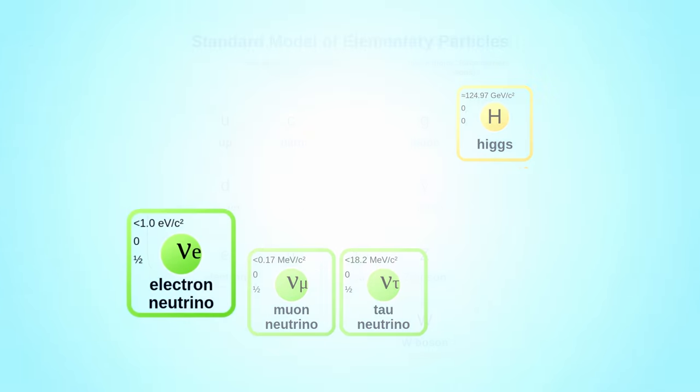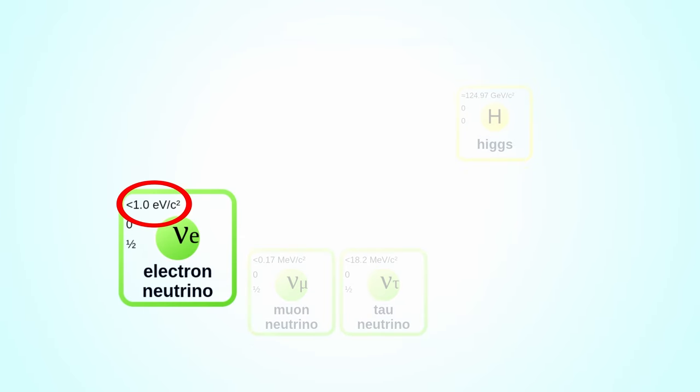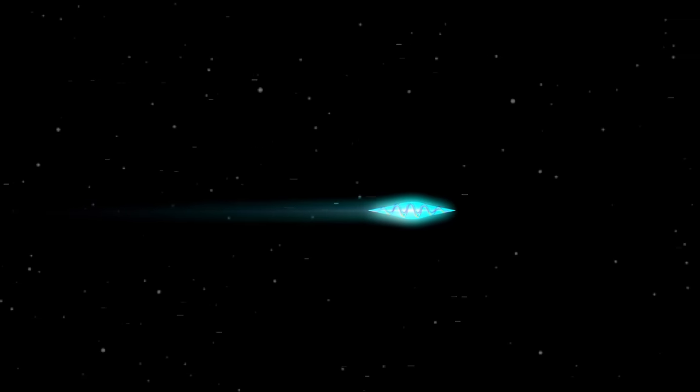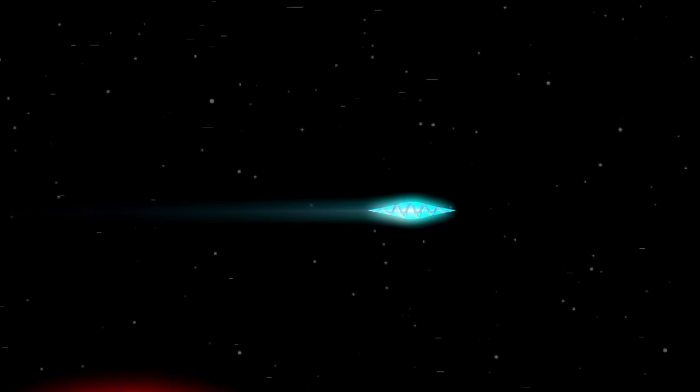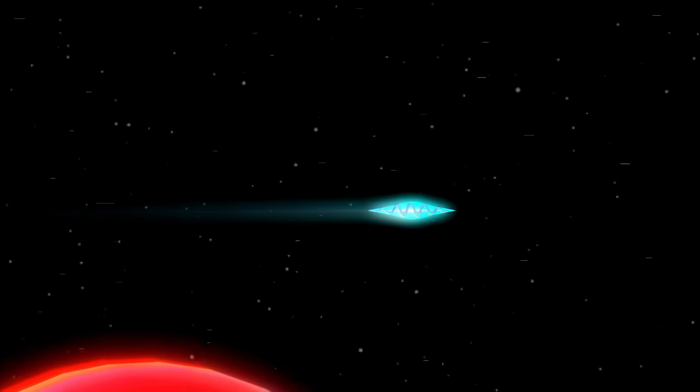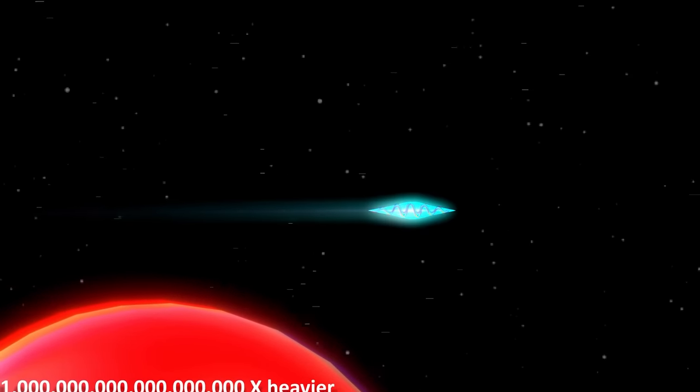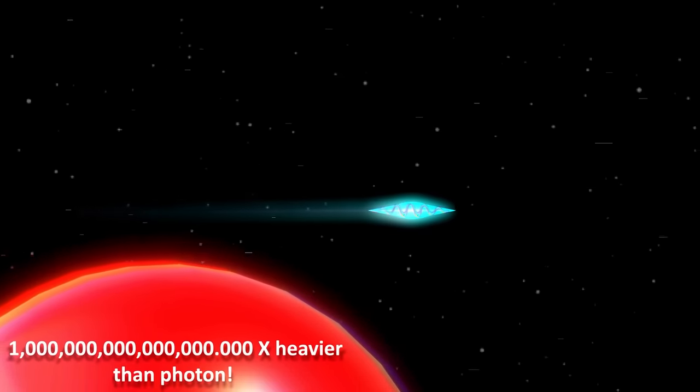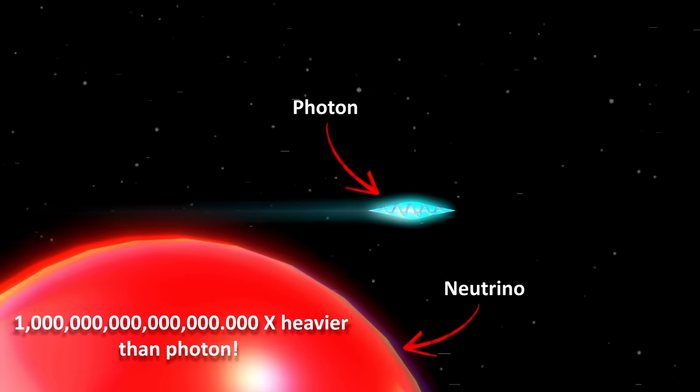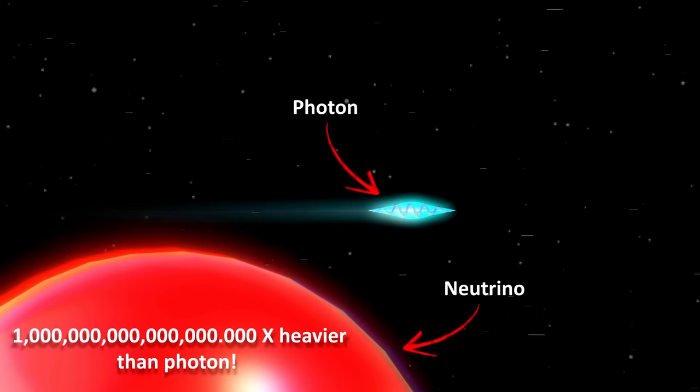But neutrinos are so light that we don't know their mass precisely. We just know that they must not have a mass higher than about 0.8 electron volts, otherwise we would have detected that mass. To give you an idea of the relative mass of photons compared to neutrinos, which seem to be almost massless, photons would still be around 1 quintillion times lighter than neutrinos. Remember that until recently we thought neutrinos were massless because they are practically moving as fast as photons.